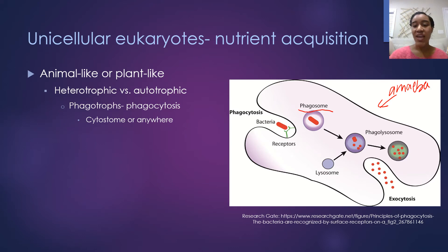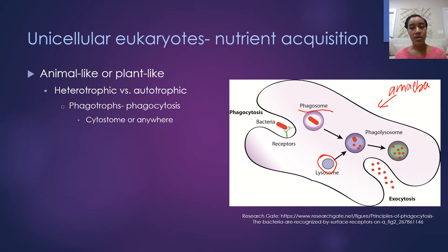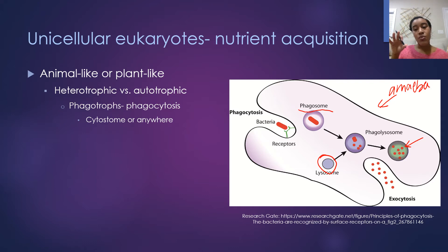The phagosome combines with a lysosome, which releases its enzymatic contents into the phagosome and digests the bacteria. As the bacteria is digested, smaller molecules like base sugars and proteins diffuse out of the phagosome and into the cytoplasm so the amoeba can use those nutrients. Any undigestible material — indicated by red dots in the diagram — is removed via exocytosis, where the phagosome vesicle fuses with the cell membrane and releases undigested contents back into the environment.